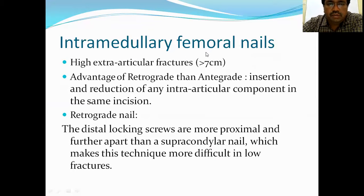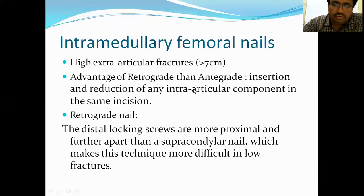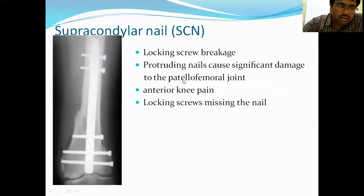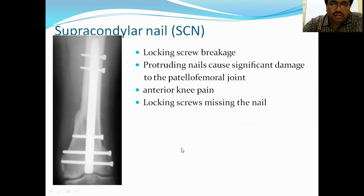Another option is retrograde intramedullary femoral nailing — the nail is passed retrograde after reducing the fracture. For a simple Type A1 fracture, the fracture is reduced, the nail is passed retrograde, and interlocking screws are applied. This is called the supracondylar intramedullary nail.